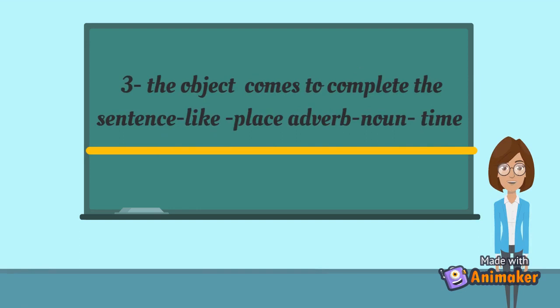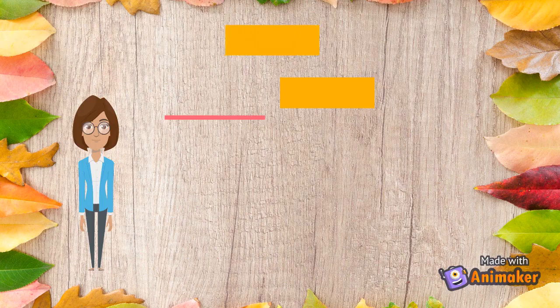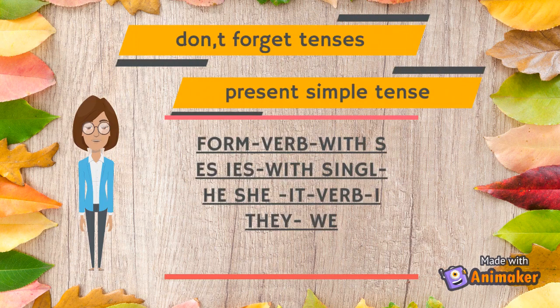The object comes to complete the sentence, followed by place, adverb, and time. Don't forget the tenses. One: present simple tense — the verb is added S.